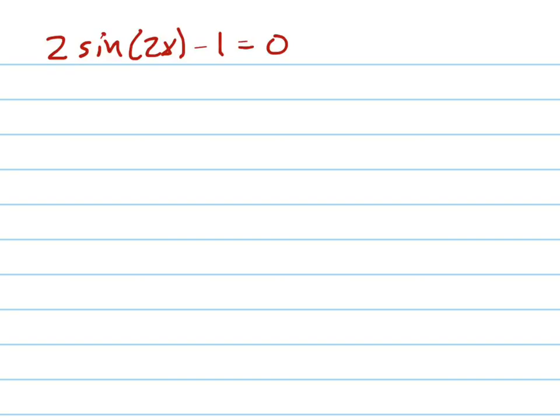Solve the equation 2 sine 2x minus 1 equals 0. So the first thing I'm going to do is set this equal to 0, so the sine of 2x equals 1 half.